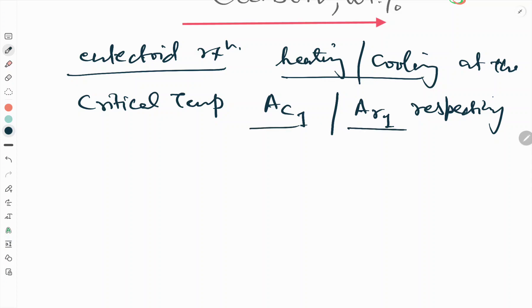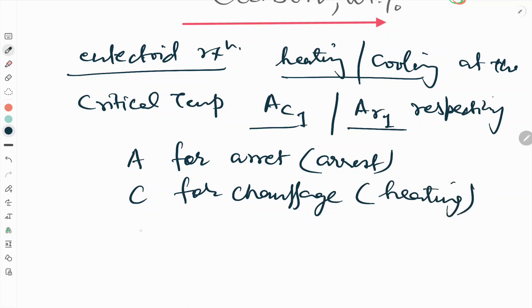What does it mean AC1 and AR1? We will see the letter stands for the French words. A for arret, that means arrest. C for chauffage, that means heating. And R for refroidissement, that means cooling. So at a particular temperature, heating means increasing temperature, cooling means cooling down or decreasing the temperature.